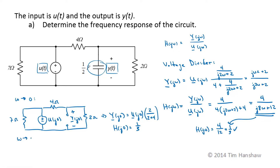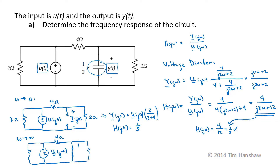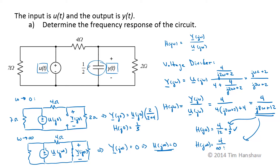I also want to check as omega goes to infinity. The capacitor becomes a short circuit at high frequencies, and by definition there is no voltage difference across a short circuit. So Y of j infinity equals 0, which means H of j infinity equals 0. Plugging infinity into our expression gives 4 over infinity plus 12, which is just 0. That checks out — we have a usable frequency response.